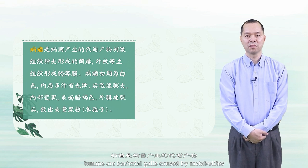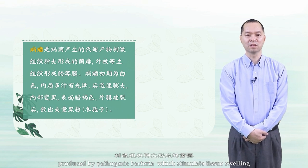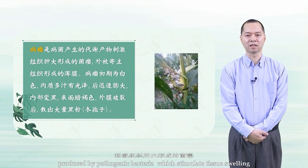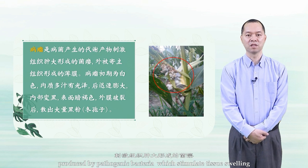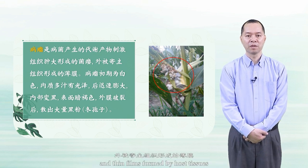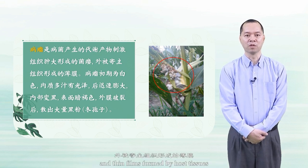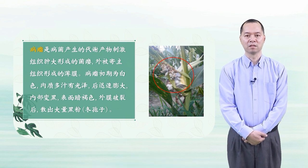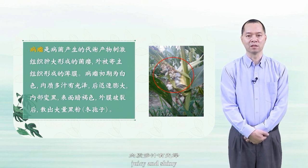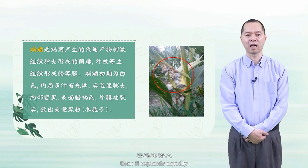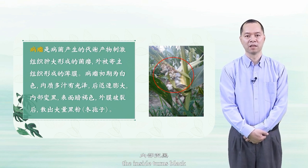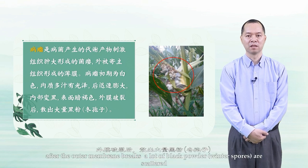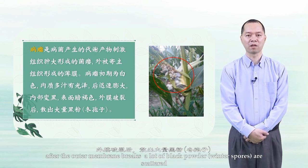Tumors are bacterial galls caused by metabolites produced by pathogenic bacteria, which stimulate tissue swelling, and thin films are formed by host tissues. At the beginning of the disease, the tumor is white, juicy, and shiny. Then it expands rapidly; the inside turns black and the surface becomes dark brown. After the outer membrane breaks, a large amount of black powder — winter spores — is scattered.